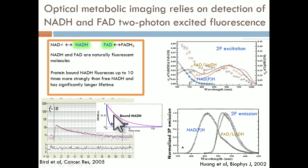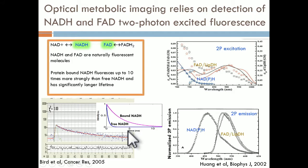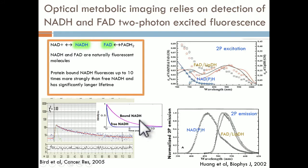We also know quite a bit about the fluorescence lifetime properties of these chromophores. For example, NADH that is free in the cytosol has a much lower lifetime than NADH that is bound, which is typically found in mitochondria.